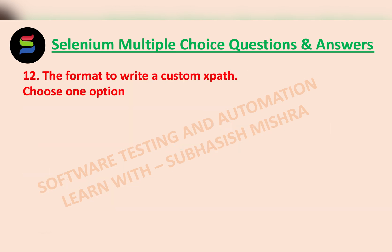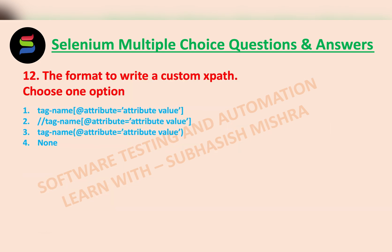The format to write a custom XPath — we have four options. The correct answer is option 2: double slash, tag name, then @attribute = 'attribute value'. This is the right way to write a custom XPath.